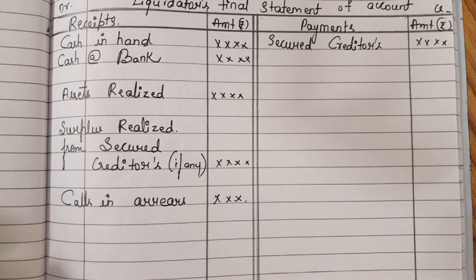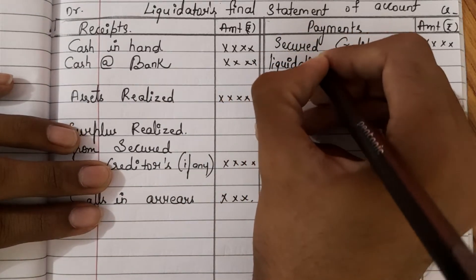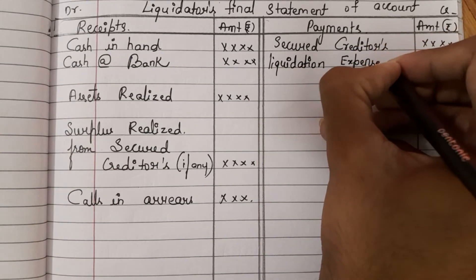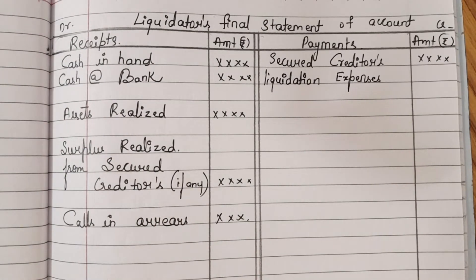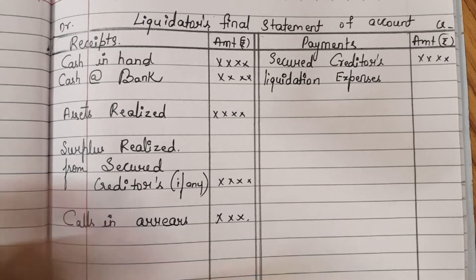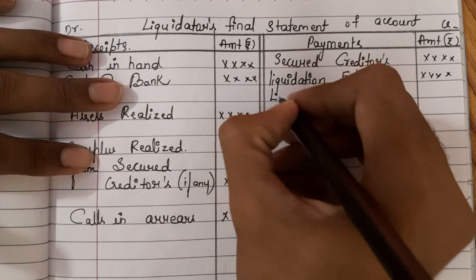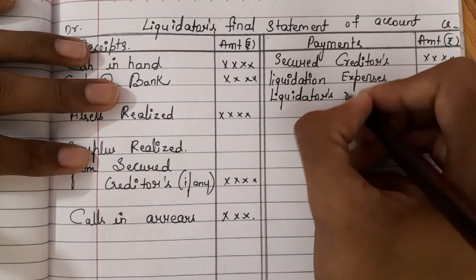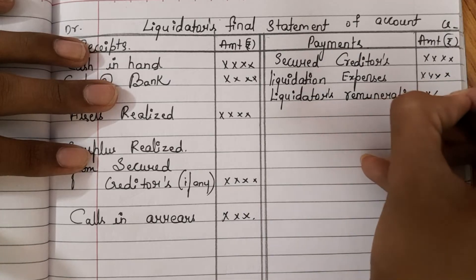They will make you clear them first. Next are the liquidation expenses — to close the company, the liquidator gives an advertisement in the newspaper announcing that these assets are available. The public will then be aware of whatever assets the company has. Some expenses will be incurred for that, and those have to be cleared first. Next is the liquidator's remuneration, which may be a fixed amount or on a percentage basis.